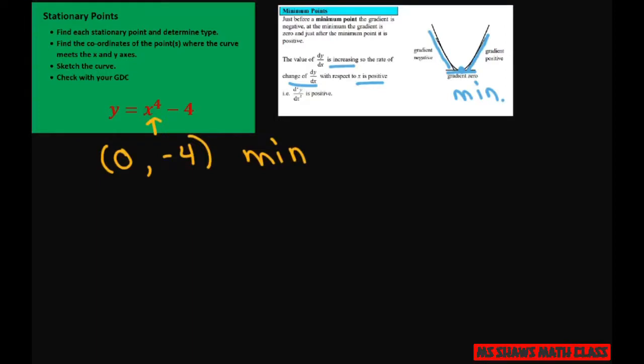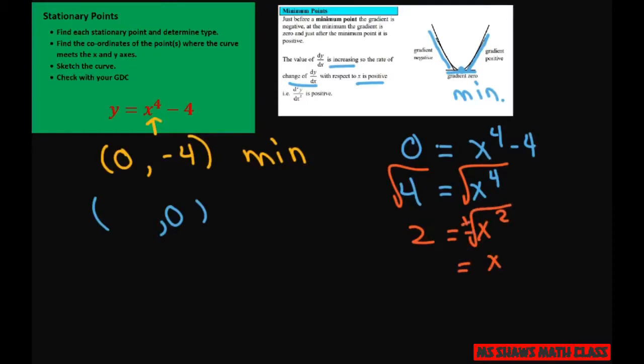And then to find the x-intercepts, that is when y is zero. So let's set y to zero. So you get four equals x to the fourth. And now let's square root both sides. So you get two equals x squared. So x equals, when you square root both sides, you're going to get x is plus or minus square root of two. That's about 1.73. So we have plus or minus square root of two.